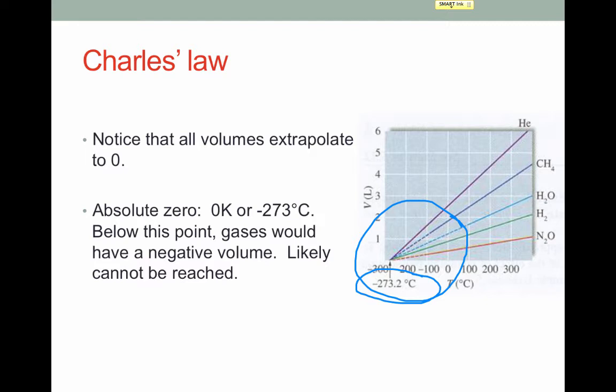All of the gases extrapolate to negative 273.2 degrees Celsius. This number should ring a bell — to convert from Celsius to Kelvin, we add 273.2, or 273 if you're rounding. This is the basis for the Kelvin temperature scale, which places zero at absolute zero — the point where gases occupy zero volume. This is a theoretical limit, but scientists have been able to achieve temperatures very close to absolute zero.